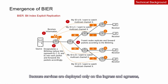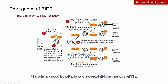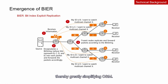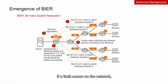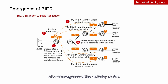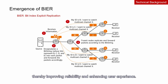Because services are deployed only on the ingress and egresses, transit nodes are unaware of multicast service changes. When the network topology changes, there is no need to withdraw or re-establish numerous MDTs, thereby greatly simplifying operation and maintenance. BIER reduces the number of entries that need to be stored, because it does not need to maintain per-flow MDT states. If a fault occurs on the network, devices only need to update entries in their BFTs after convergence of the underlay routes, ensuring fast convergence and improving reliability and user experience.